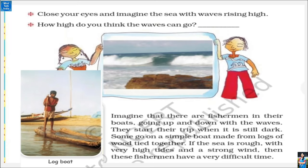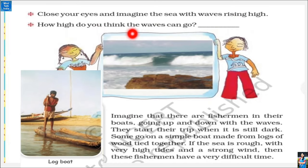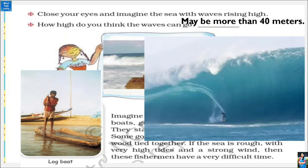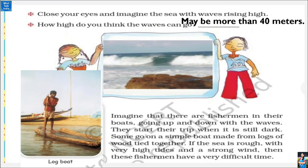Now we can see the next question in our textbook. Close your eyes and imagine the sea with waves rising high. How high do you think the waves can go? In this picture we can see a person surfing — how tall do you think the person and the wave are? We can say that waves can go about 40 meters high.